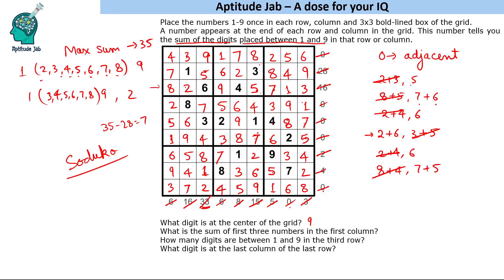Now we can answer the questions. The first question we already filled in the beginning: what is the sum of the first 3 numbers in the first column? The first column's first 3 numbers are 4, 7, and 8, so the sum is 19. How many digits are between 1 and 9 in the third row? There are 3 digits in between. What digit is at the last column of the last row? The answer is 8.